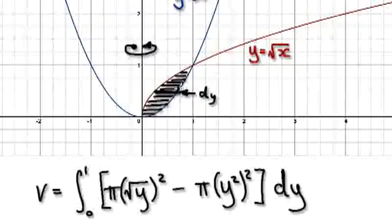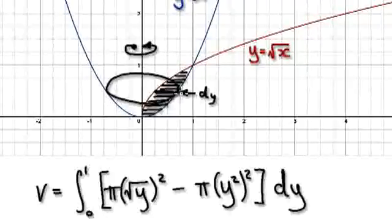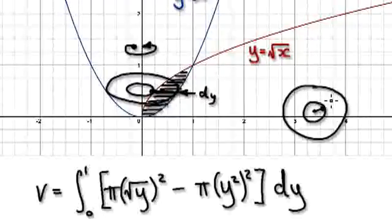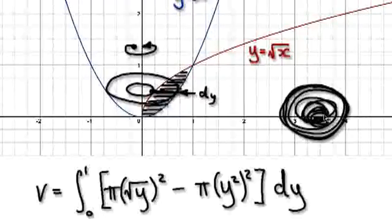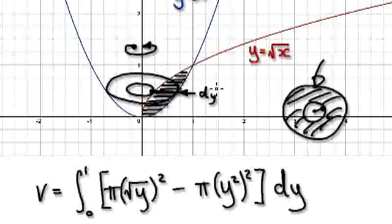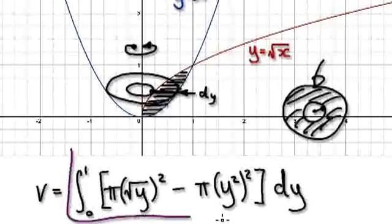If you rotate it 360 along the x-axis, it will give you this circle here. And then you've got to take away the small circle. So if you get the big circle and take away the small circle, then what's left will be this bit here. So summing up all the washers here would be you doing this.